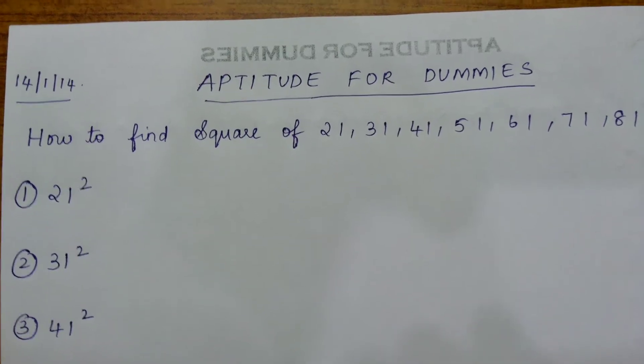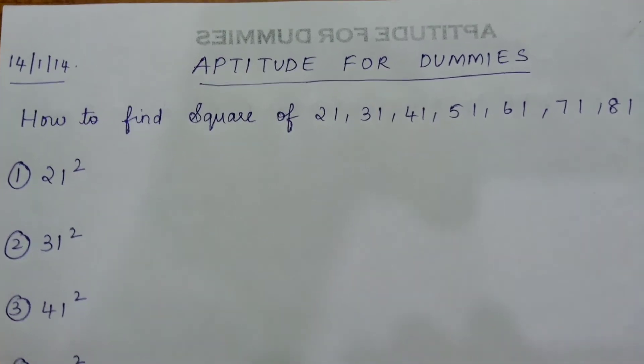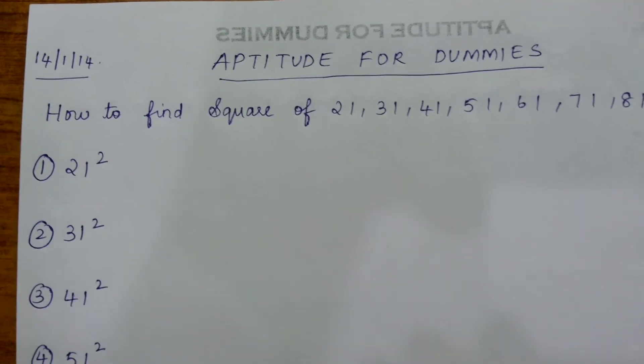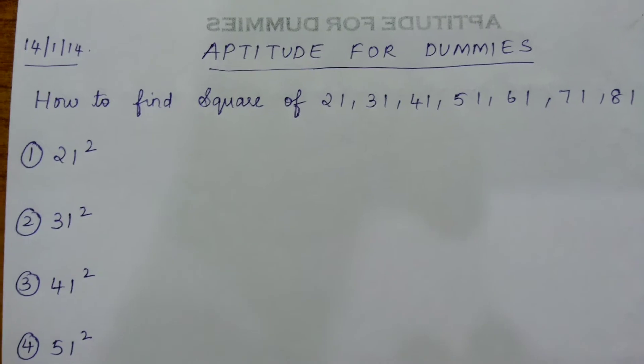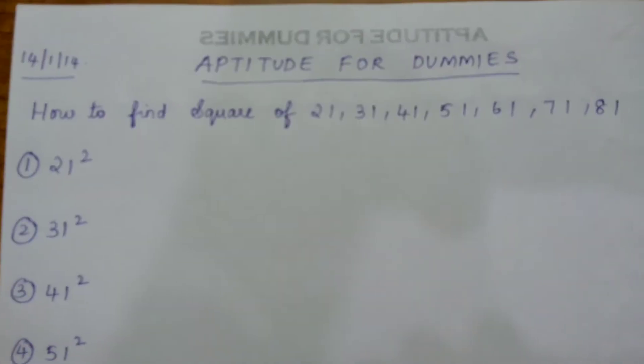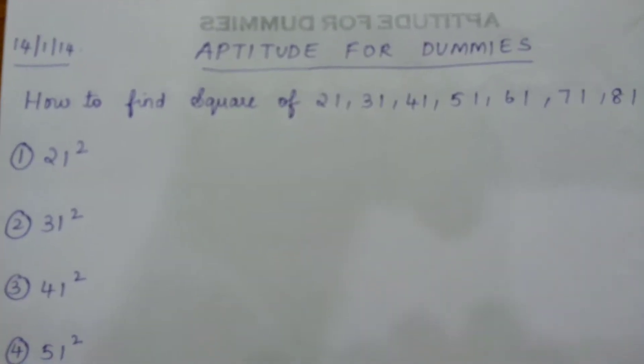Hi friends, welcome to Aptitude for Dummies. Today we are going to learn how to find the square of 21, 31, 41, 51, 61, up to 81.